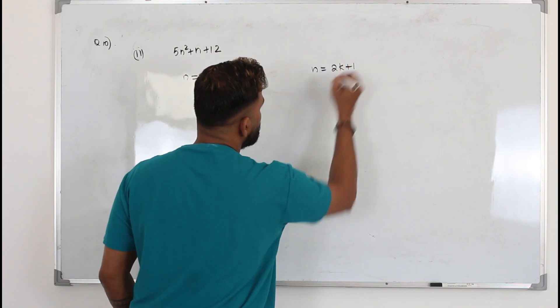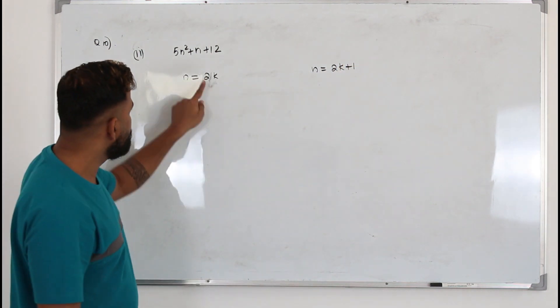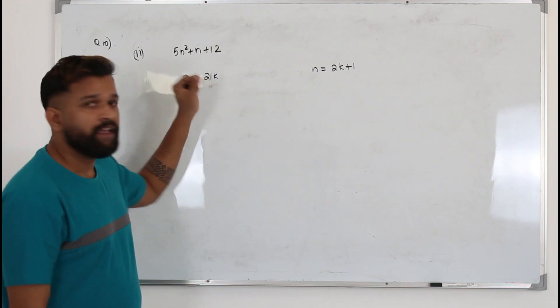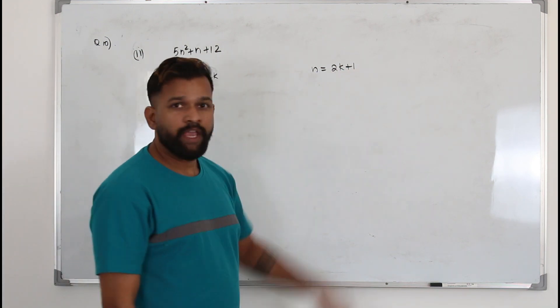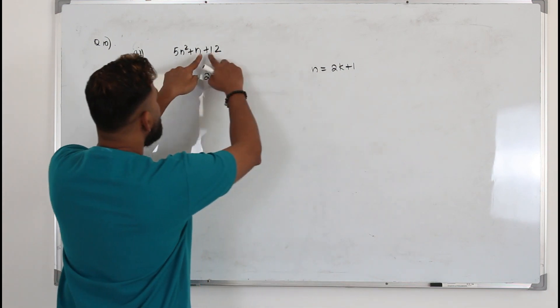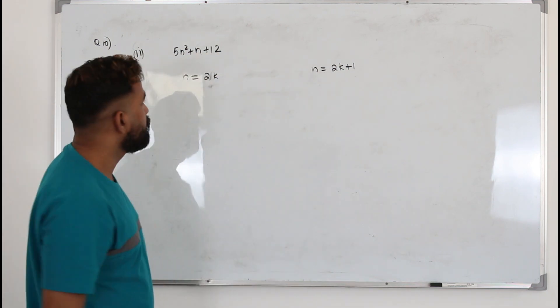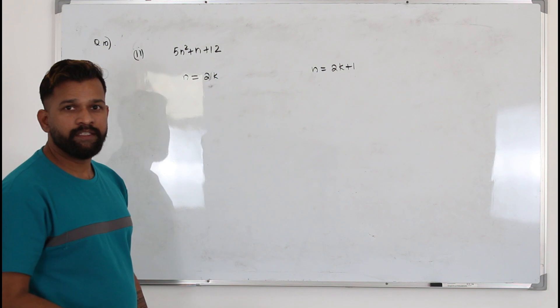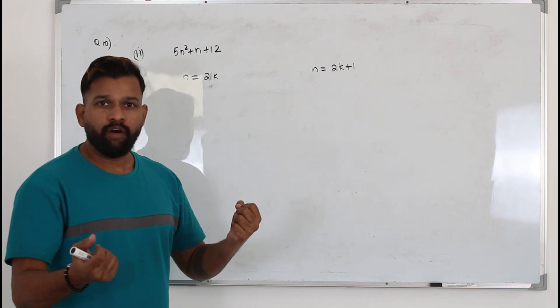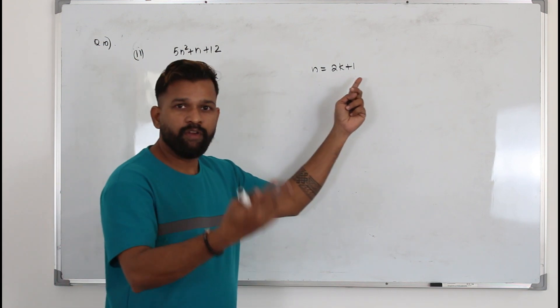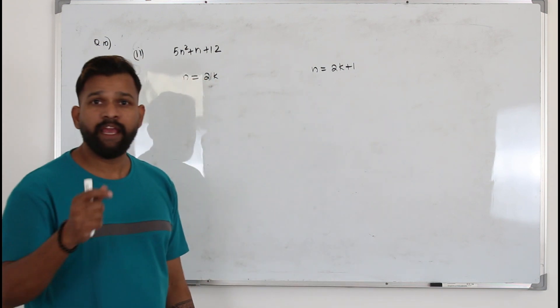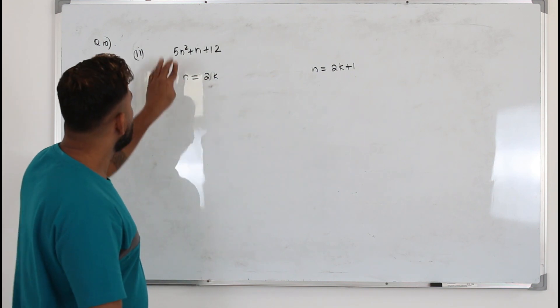Remember, if you want to take it as even, you always put it as 2k. If you want to take it as an odd number, write it as 2k plus 1. Plug in here and check whether you get an even number. There is one more case apart from even and odd: n can be 0 also. If you put 0 here, definitely 12 is an even number.